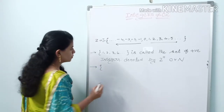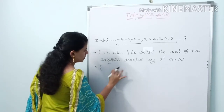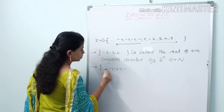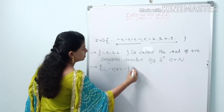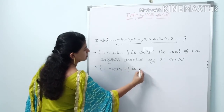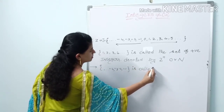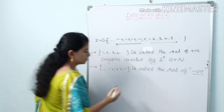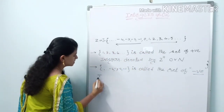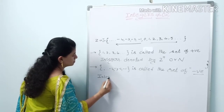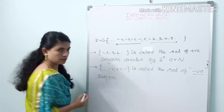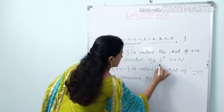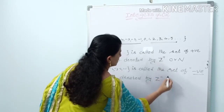The set of negative numbers — minus 1, minus 2, minus 3, minus 4 and so on — is called the set of negative integers. It is denoted by capital Z minus.